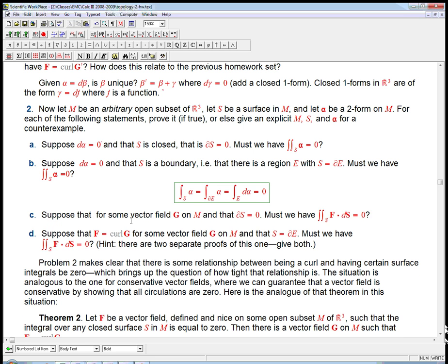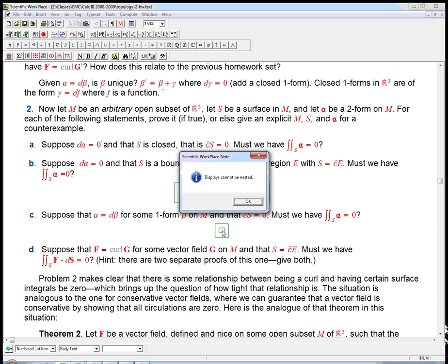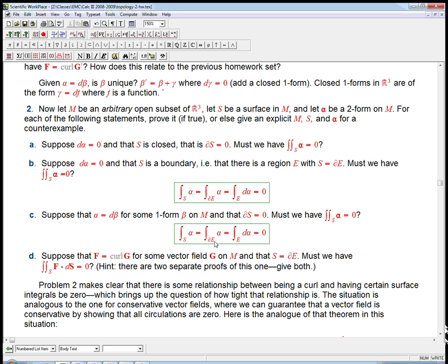Now, similarly here, we replace this with a stronger condition. Suppose alpha is known to be exact. Suppose alpha is exact for some, in other words, this is a one form, for some one form beta on M. And that the s is only known to be closed. It's not known to be a boundary. Must we have that the integral of alpha equals zero? Absolutely. And it's just Stokes' theorem, but in another degree. So here, the integral of s of alpha, we don't change this thing. We don't rewrite this guy. We write this as d beta. Alpha is special because it can be written as d beta. Now, we use Stokes' theorem in the other direction. This becomes the boundary of s of beta. And we know that the boundary of s is zero, and so this is the integral of zero.